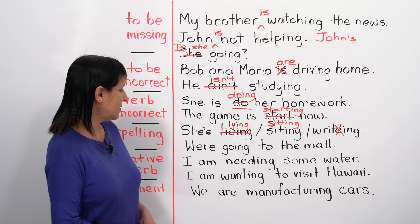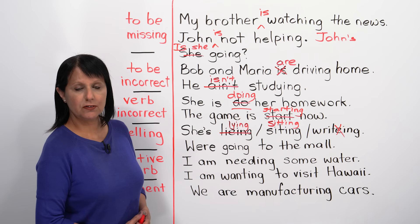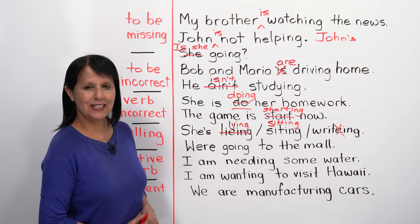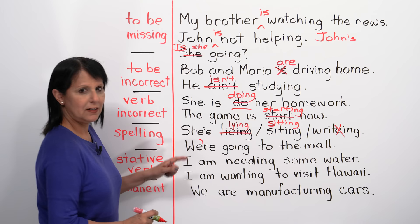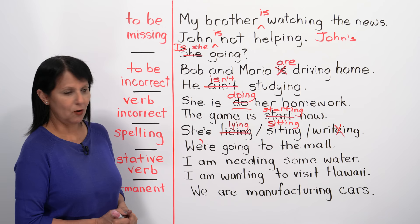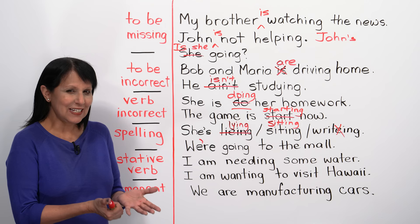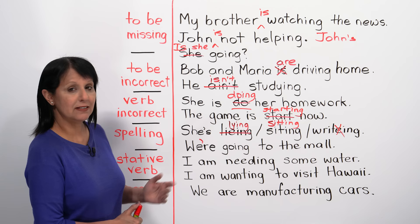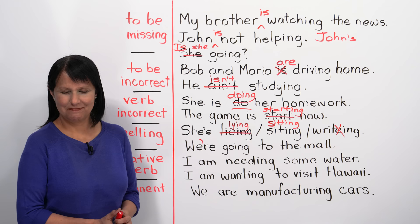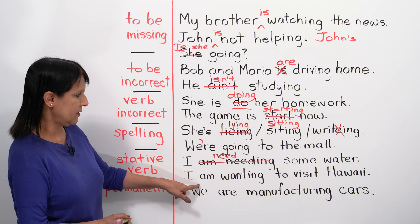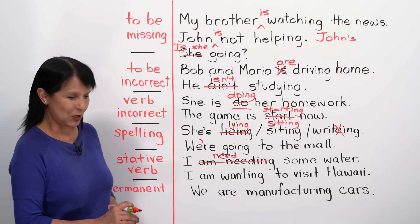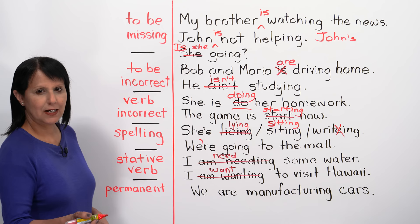Sometimes people forget and use a stative verb in this tense anyway. For example, 'I am needing some water' is wrong — 'need' is a stative verb, so you just say 'I need some water.' Similarly, 'I'm wanting to visit Hawaii' is wrong — 'want' is another stative verb — so you say 'I want to visit Hawaii.'